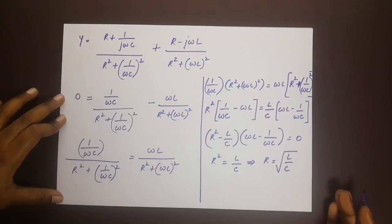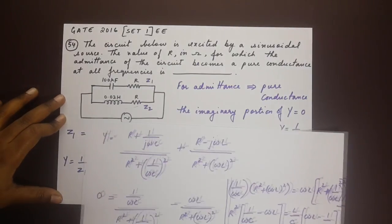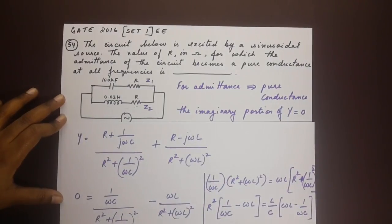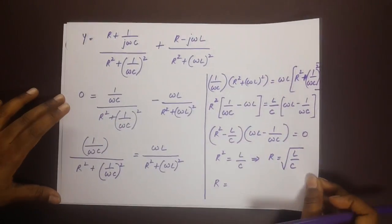This is our condition for resonance really. We have our values for L and c given in the circuit. If we substitute that, what are the values given to us? We have L as 0.02 and c as 100 micro.